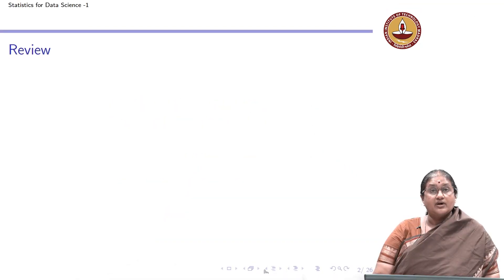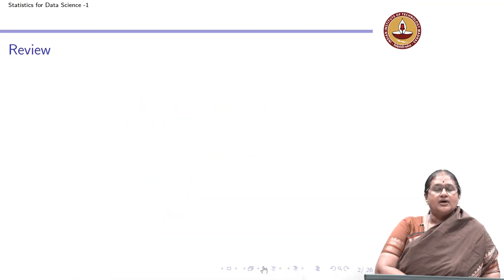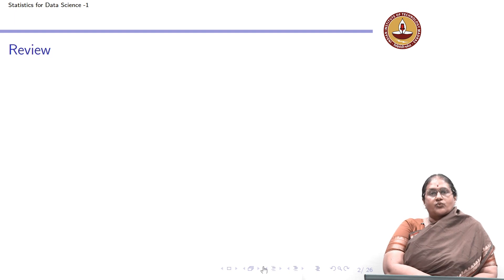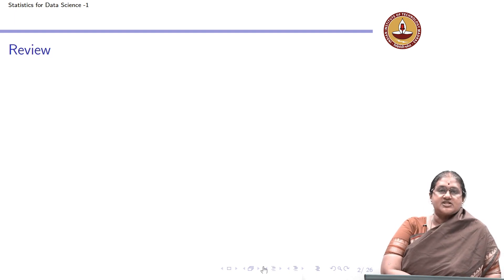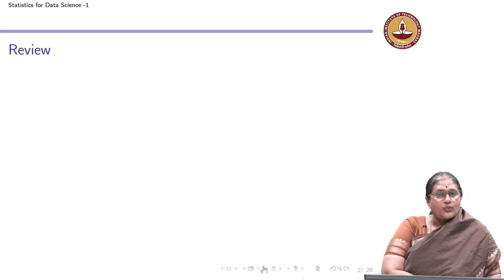Welcome. This is Week 4 of your online Statistics for Data Science 1 course. In this week, we will understand about association between two variables. Before we understand what we can expect from this week, we will just take a quick look at where we stand now.